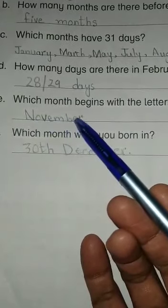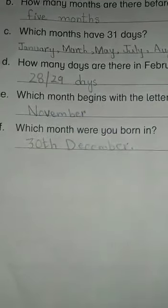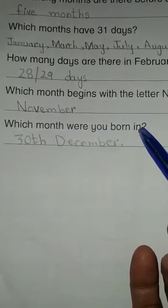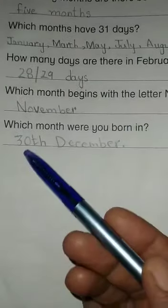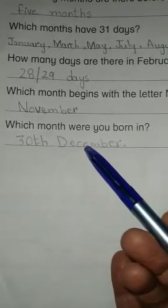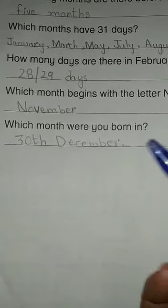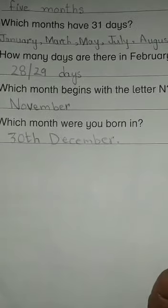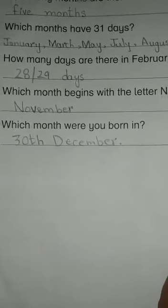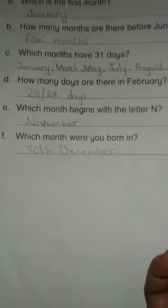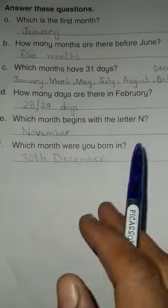Next question: which month were you born in? I am writing here my own date of birth — 30th December. You can write your own date of birth. Students, you have to prepare your lesson carefully and write it in a very neat and clean handwriting.